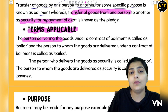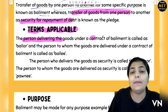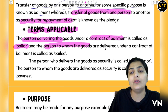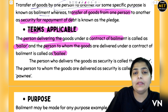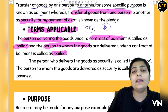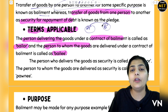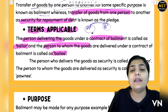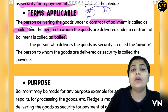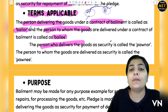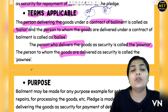In Bailment, the person who delivers the goods is called the Bailor, and the person who receives the goods is called the Bailee. Whereas in Pledge, the person who gives the goods as security — suppose I took money from someone and I am giving my property documents or jewelry as security — I would be called the Pawnor, and the person to whom I give the goods is called the Pawnee.